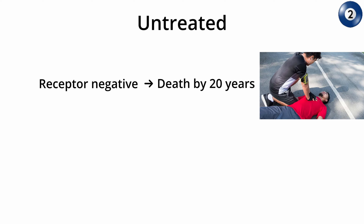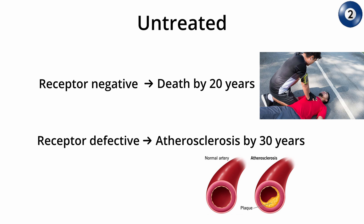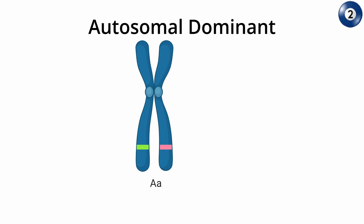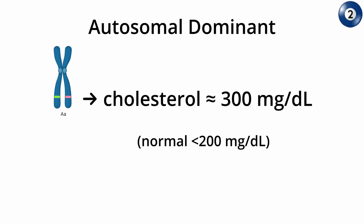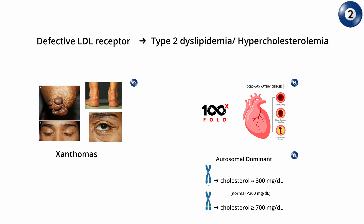Familial hypercholesterolemia results in an almost 100-fold increased risk of coronary artery disease. Patients with untreated receptor-negative conditions seldom survive beyond their 20s, whereas those with the defective subtype have a better prognosis but inevitably develop clinically apparent atherosclerotic vascular disease by age 30. The condition follows an autosomal dominant inheritance pattern. Individuals carrying one copy of this mutation have cholesterol levels around 300 mg/dL, while those with two copies have levels of 700 mg/dL or higher.